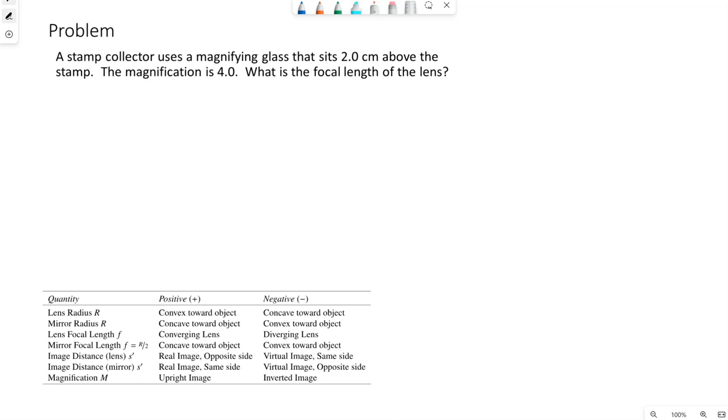An example problem here: a stamp collector uses a magnifying glass that sits two centimeters above the stamp. The magnification is four. What is the focal length of the lens?